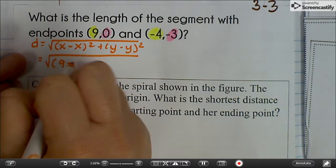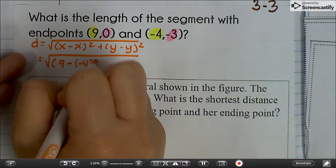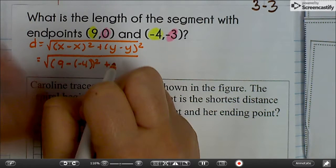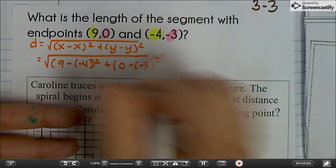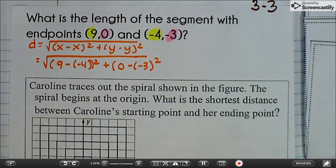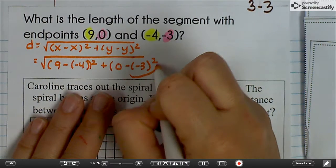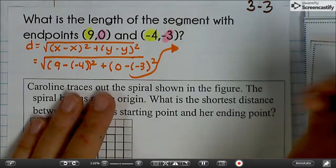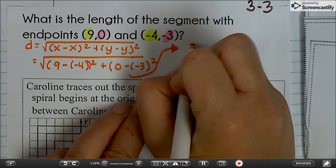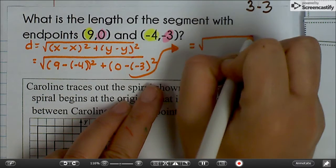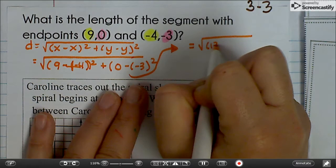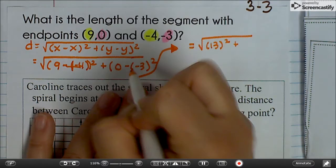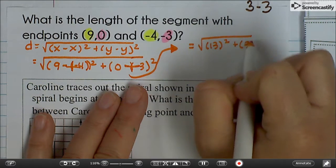So we're just going to plug everything in. The x's, 9 and negative 4, 9 minus negative 4 squared plus y's, 0 minus negative 3 squared. Again, you should be pretty comfortable doing this yourself and just using mine right now to check your answers. I'm going to change that out to a plus.